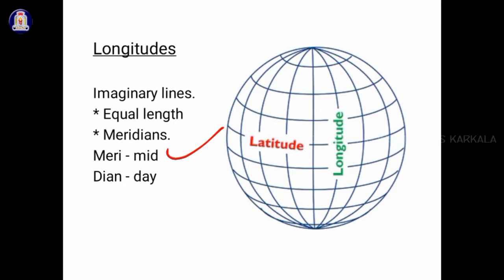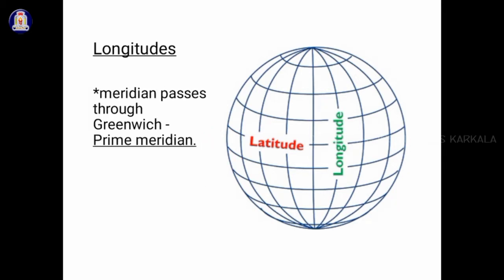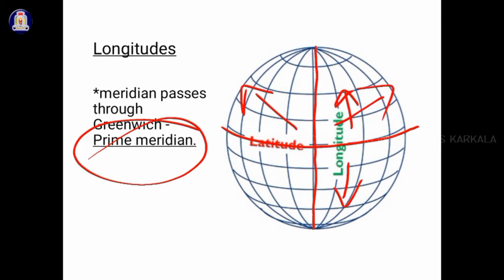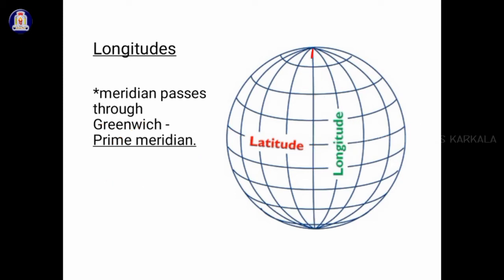"Meri" means mid and "dn" means day. The meridian which passes through Greenwich, England, has been chosen as the prime meridian. The prime meridian plays the same role that the equator plays — just as the equator divides the globe into the Northern Hemisphere and the Southern Hemisphere, the prime meridian divides the globe into the Eastern Hemisphere and the Western Hemisphere.